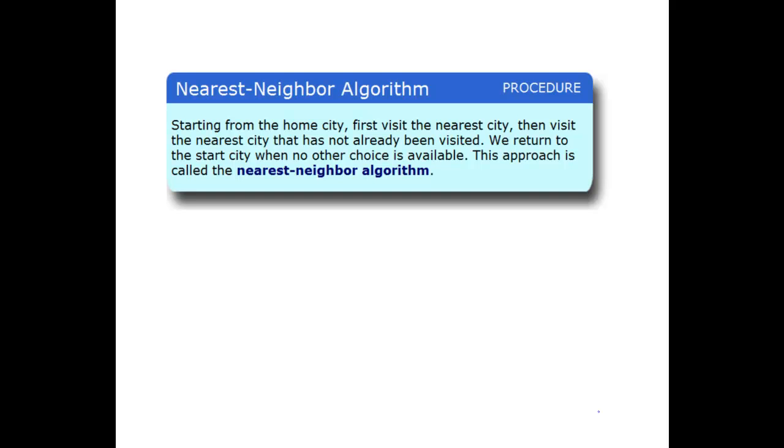All right, we're looking at the nearest neighbor algorithm, and the nearest neighbor algorithm is just that. We're going to look at a graph, and I'm going to look at all my options. If I have 10 cities that I'm going to, I'm going to look at the 10 cities, and whichever one's the closest I'm going to go to. And I'm going to go to that city, and then look at my 9 remaining cities, and I'm going to look which one's closest, and go to that one. And I continue this until I get a Hamiltonian circuit.